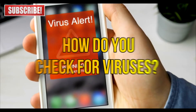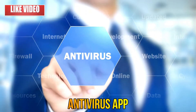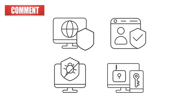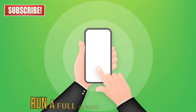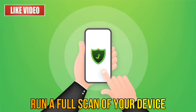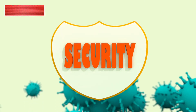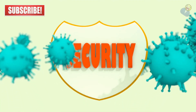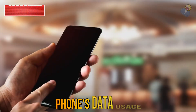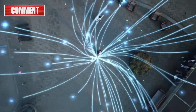So how do you check for viruses? Start by running a reputable antivirus app — there are plenty of trusted options available for both Android and iOS. Download and install the app, then run a full scan of your device. The app will identify and help you remove any malicious software.